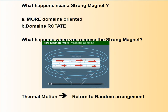Near a strong magnet, the domains get oriented — they rotate, they actually turn. When you take the strong magnet away, it maintains its magnetism for some time. But thermal motion, dropping, or whacking the magnet can return the random arrangement. So be very careful with your magnets. Don't drop them because you actually decrease their magnetic strength.